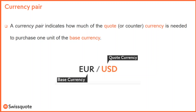The base currency is the first, and the quote or counter currency is the second. The base currency is always one. For EUR/GBP, how many GBP do you need to buy one euro? For USD/CAD, how many CAD do you need to buy one dollar? The first — base currency — is always one. The second is the quote currency, and then there is the movement of the price.